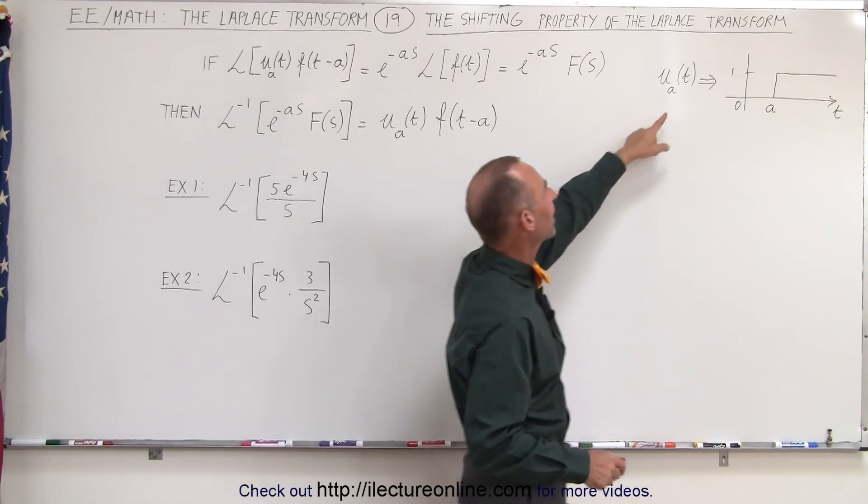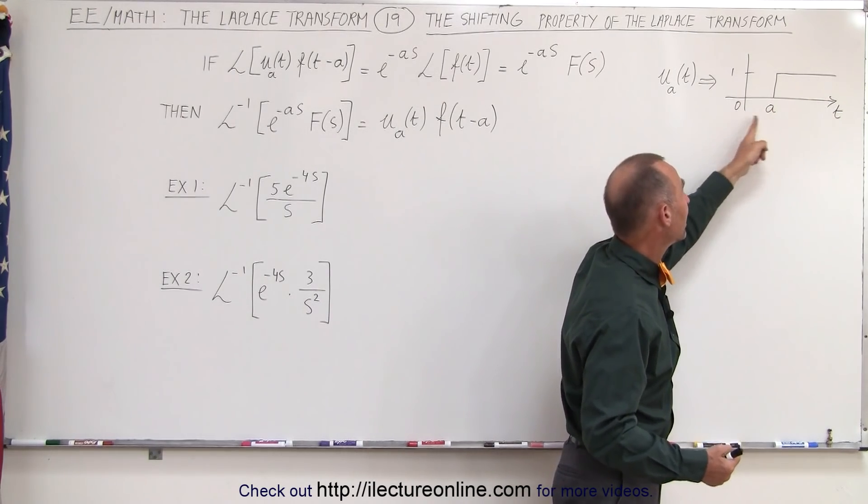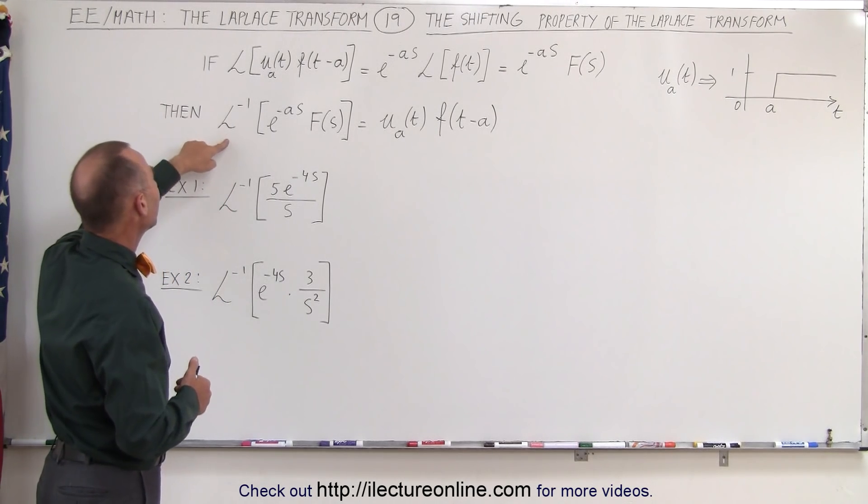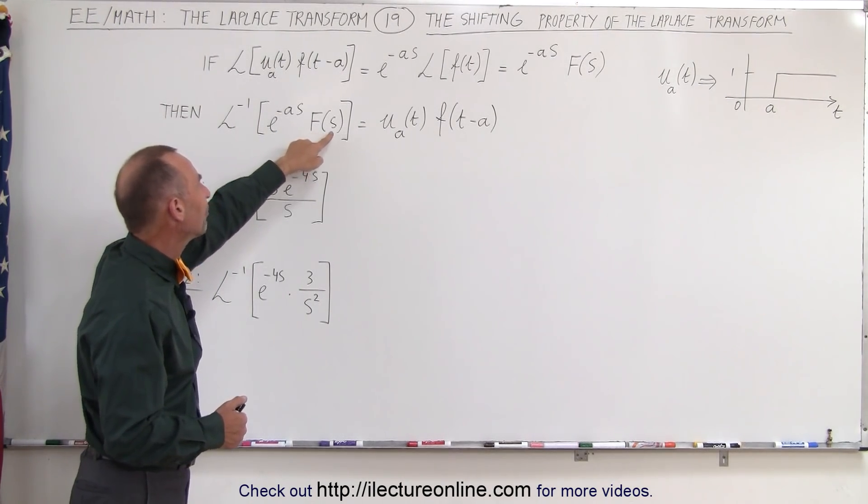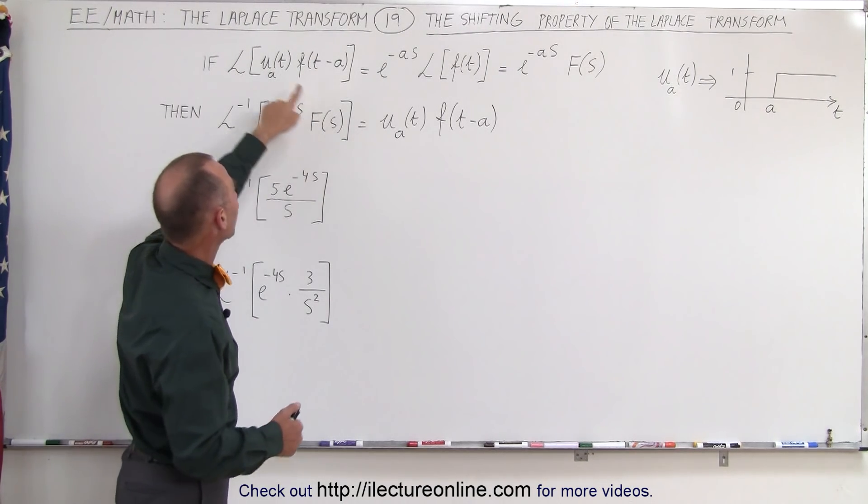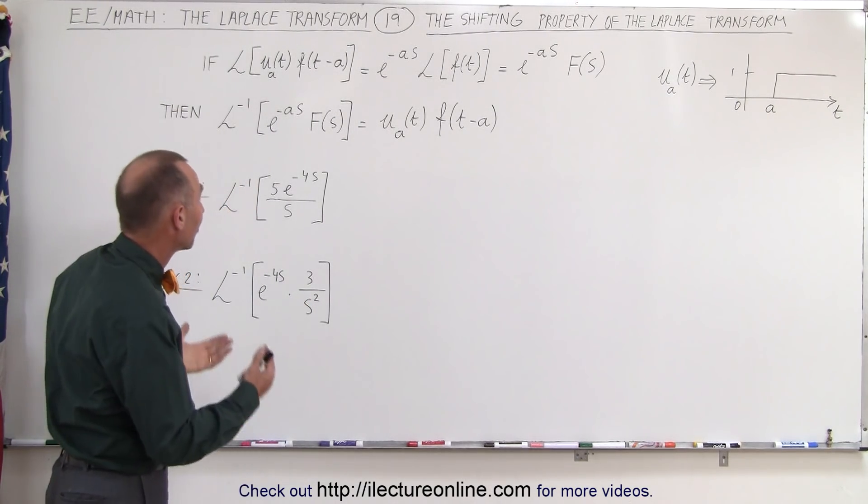Remember that u sub a times t is simply the step function delayed by a time equals to a. If we now take the inverse Laplace transform of that, we get e to the minus as times the function in the frequency domain. Take the inverse transform of that, we should get back the original that we started with. So let's apply that to some examples and see what we get.